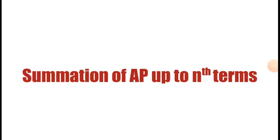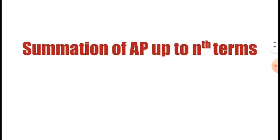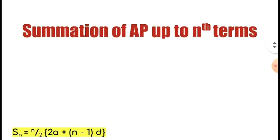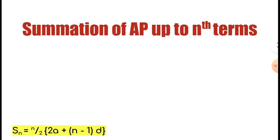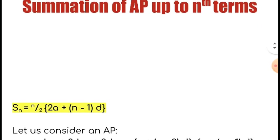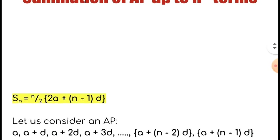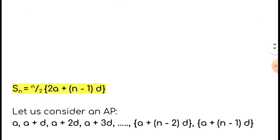Dear Learner, today I am going to discuss the summation of arithmetic progression up to the nth term, that is S_n equals n over 2 times (2a plus (n minus 1) times d). Let us derive the formula.